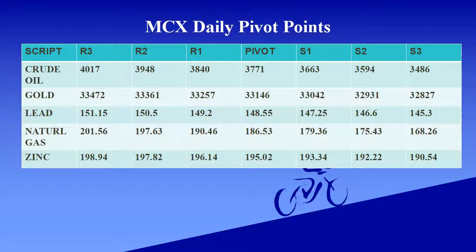Gold pivot level is 33,146. Support level ranges: 33,042 and 32,827. Resistance level ranges: 33,257 and 33,472.